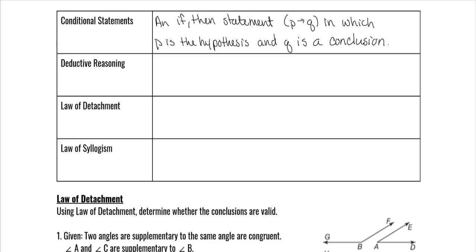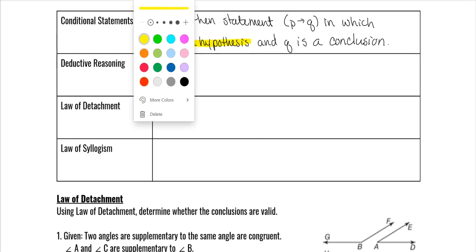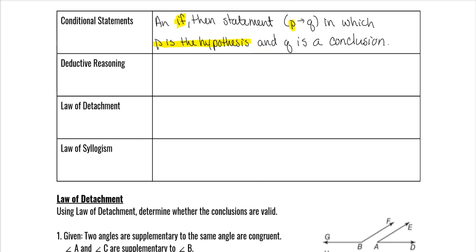This is a really important definition to understand, so we'll always go with the hypothesis of some statement. Let's say the statement is: 'If you study for a test, then you will pass.' 'If you study for a test' is represented by p, and 'you will pass' is the conclusion, represented as q.